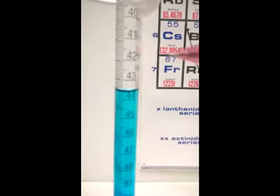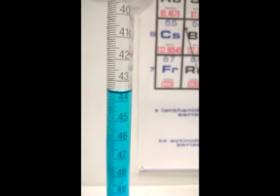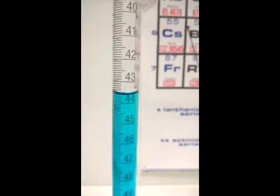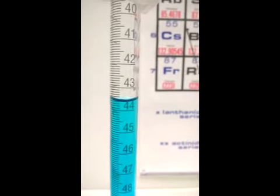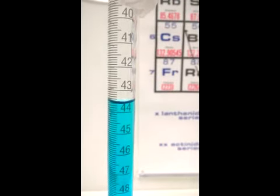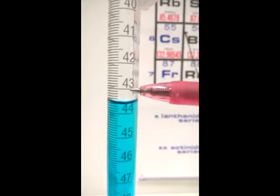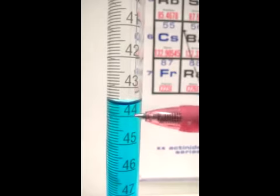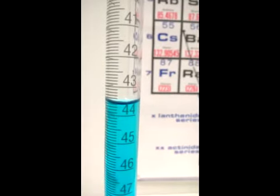Here, we have 1 milliliter increments from 43 to 44 milliliters. The next thing to do is to measure the value of the solution level. Between 43 and 44, there are 10 unlabeled marks.